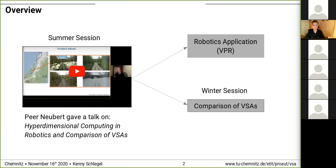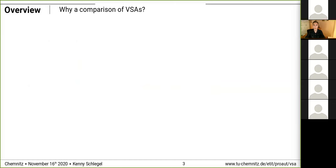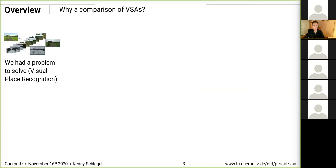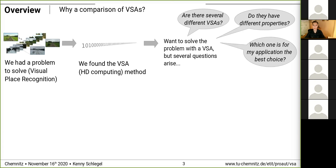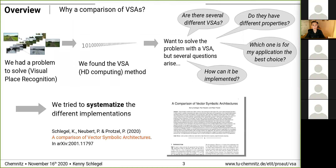Why a comparison of VSAs? I'll explain it based on our own experiences. For example, we had the problem of solving the visual place recognition task and found the method of VSAs or HD computing. Several questions arise: are there different VSAs? Do they have different properties? Which one is the best choice for my application? How can it be implemented? Especially for newcomers, it's difficult to survey, and that's why it's important to know the answers to these questions.